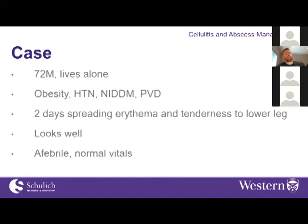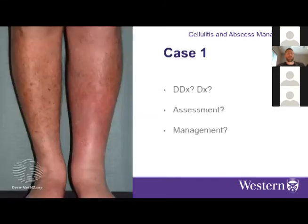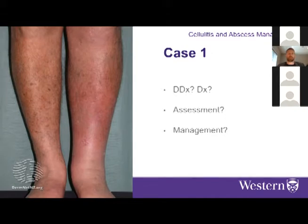First case: a 72-year-old male presenting to the emergency department who lives alone, with obesity, hypertension, non-insulin-dependent diabetes, and peripheral vascular disease. He has two days of spreading erythema and tenderness to his lower leg. He looks well, is afebrile, and has normal vitals. Think about your differential diagnosis: what can't you miss, what clinical clues aid your assessment, and what would be your management and disposition?